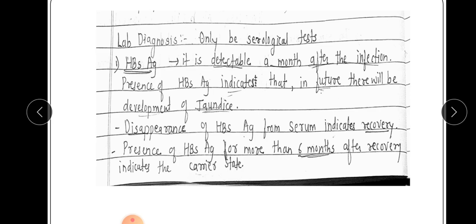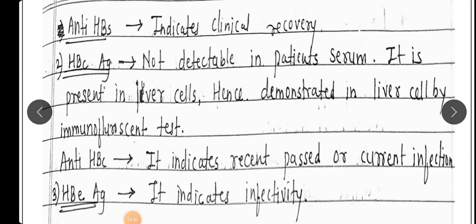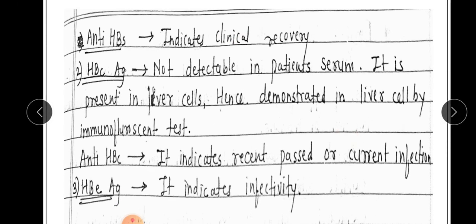If HBsAg persists in blood serum for more than six months after recovery, it indicates the carrier state. Anti-HBs antibodies indicate clinical recovery. HBcAg is not detectable in patient serum — it is present in liver cells and is demonstrated by immunofluorescent testing. Its presence in blood indicates recent, past, or current infection.